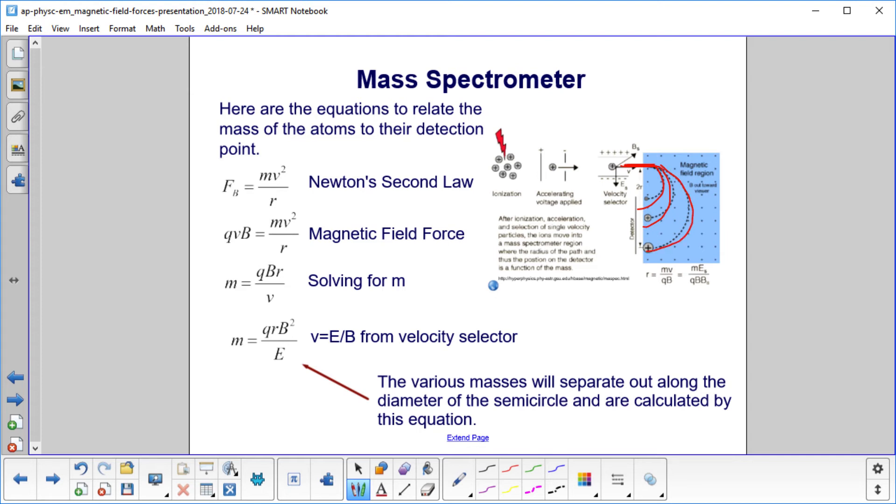They all try and make a circle, but what we do is we cut them off at the semicircle piece here. And we put detectors, and these detectors will tell us where they hit, what their value of r is.